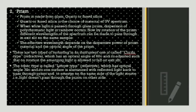Another monochromator used in UV visible spectroscopy is the prism, made of glass, quartz, or fused silica — quartz or fused silica being the material of choice for UV spectrum. When white light is passed through a glass prism, dispersion of polychromatic light into a rainbow occurs. By rotation of the prism, different wavelengths can be made to pass through the exit slit. There are two types of mounting: the Cornu type, also known as refractive, with an optical angle of 60 degrees; and the Littrow type, which is reflective with an optical angle of 30 degrees, where one surface is aluminized to reflect light back through the prism to emerge on the same side as the light source. The monochromatic light then falls on the sample.